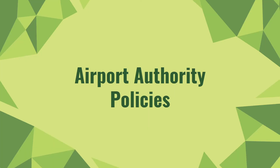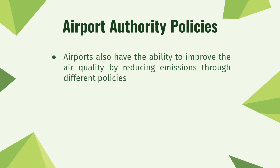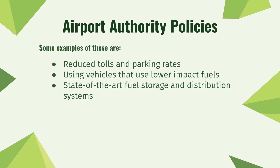Under emissions charges, there is a sub-topic called Airport Authority Policies, wherein airports can improve air quality by implementing various policies to reduce emissions from ground transportation. Examples include encouraging public transportation or use of hybrid and electric vehicles by adding reduced toll and parking rates for those vehicles. Another example is making the airport's own vehicles cleaner by using electric or lower-impact fuels such as compressed natural gas. Lastly, the usage of state-of-the-art fuel storage and distribution systems can mitigate the effects of fuel vapor loss on air quality.